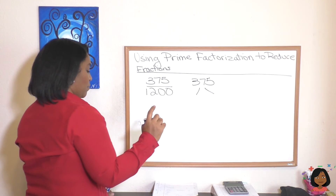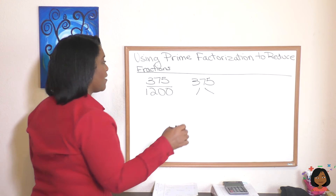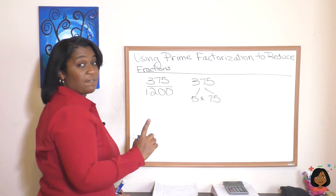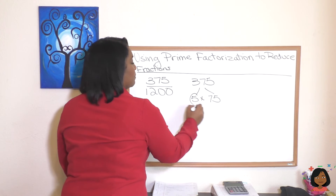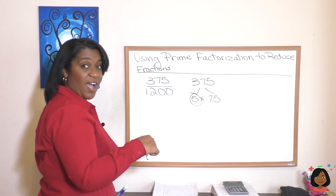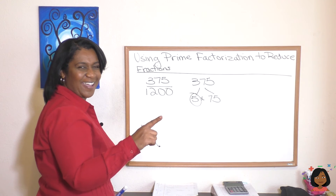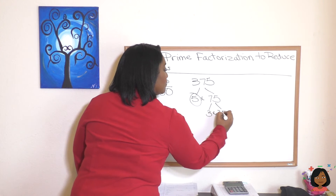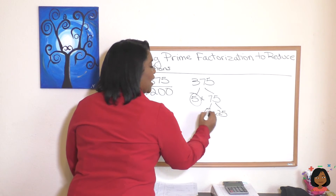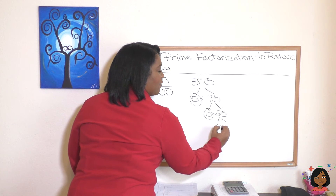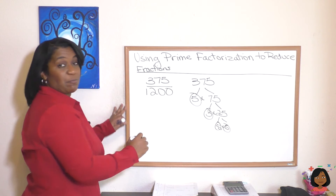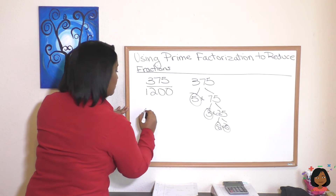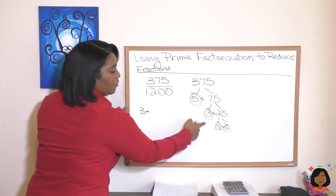I know that 5 times 75 is 375. 5 is prime, so I'm done there. But 75 is not. I do know that 25 times 3 is 75. 3 is prime, so I'm done there. And 25 breaks down to 5 and 5. So I can write the prime factorization for 375: we've got a 3 and three 5s.